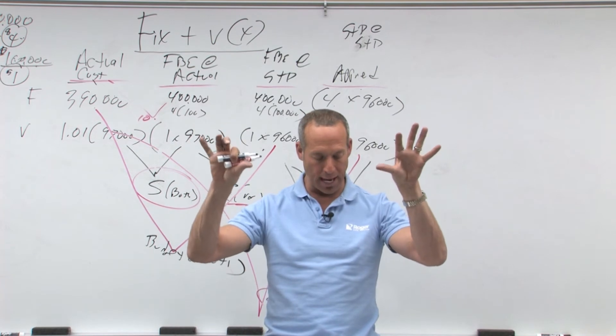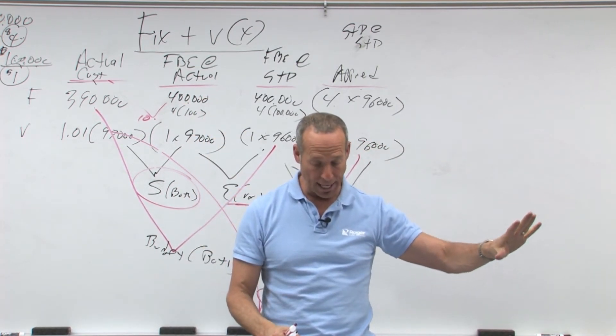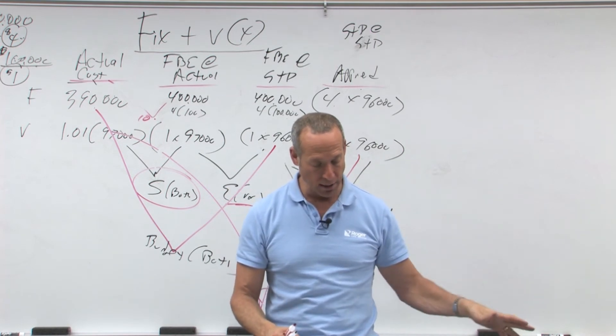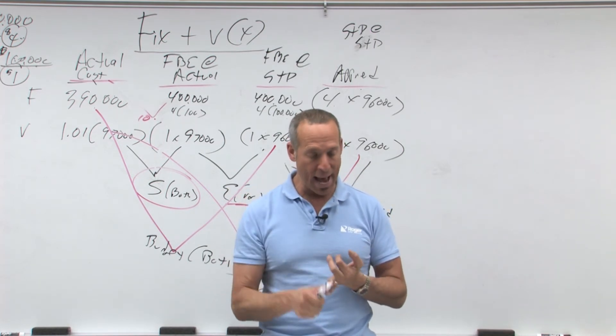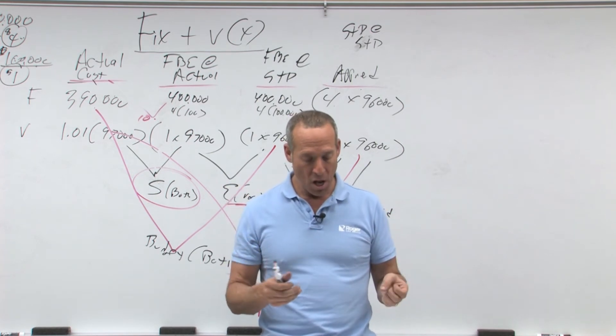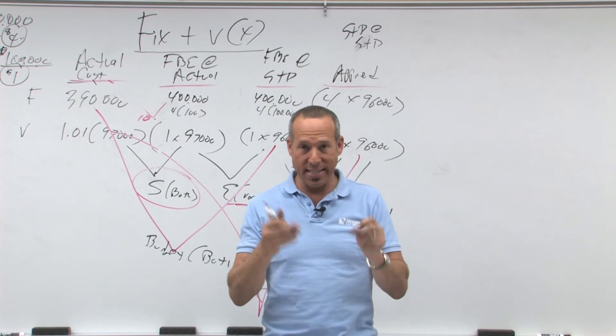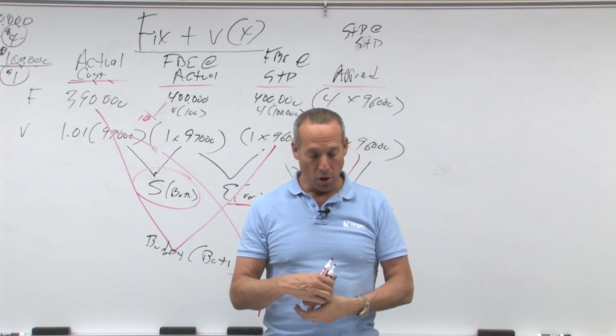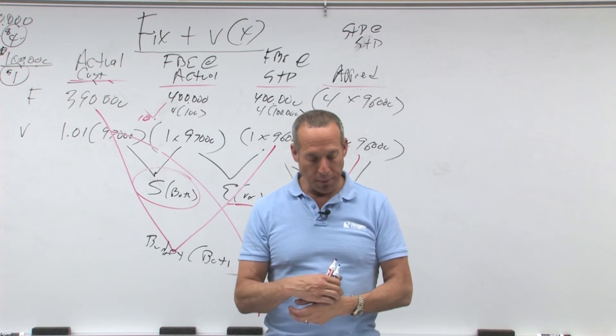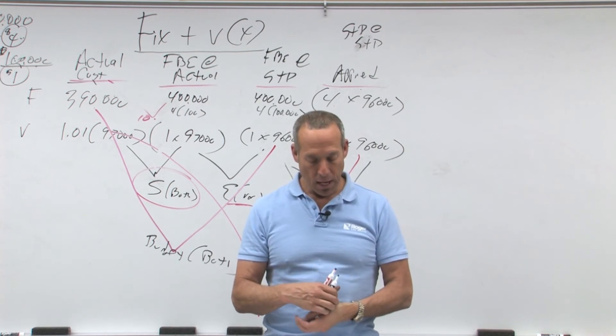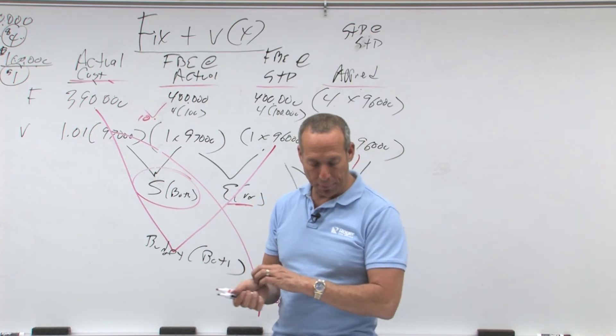Now let's look at that chart again where it says actual, flexible budget, flexible budget standard, and applied. That's what got applied into work in process. So actual overhead is actual quantity times actual. Flexible budgeted actual is your actual quantity at standard allowed overhead rate. Your flexible budget is standard quantity and standard overhead rate, and your applied is what got applied based on your application rate.